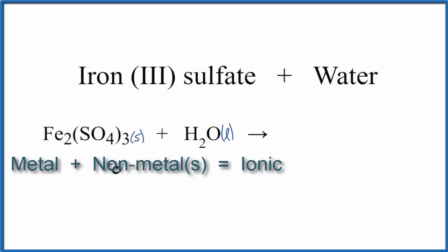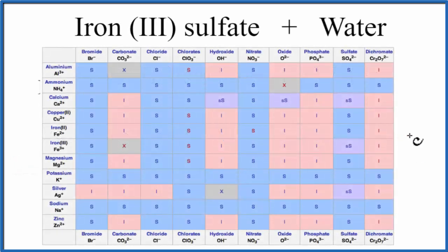And we should check to see if it dissolves in water. And we can do that with a solubility table. So on our solubility table, these are the cations, the positive ions, and we look down here, and here's iron 3, Fe³⁺, and we're going to go across to the sulfate, SO₄²⁻.